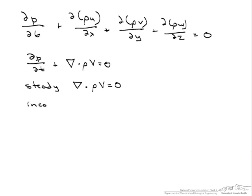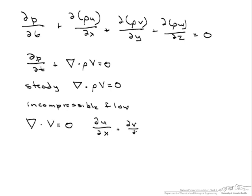Now let's assume we have incompressible flow. Since we have incompressible flow, density does not change, and so we can pull it out of the equation, and since the equation equals zero, we can get rid of density, and we are left with del·v = 0, or written in differential form: du/dx + dv/dy + dw/dz = 0.